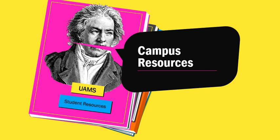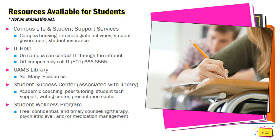Now we are going to discuss some of the campus resources available to all UAMS students. Almost all of these resources are available whether you are on campus or a distant student, so online students keep listening because some of this can be helpful. These are not an exhaustive list — there are lots of other resources — but these are some of the big ones. First we have Campus Life and Student Support Services. They deal with campus housing, intercollegiate activities, and student government. They are the ones that send the emails out for student insurance verification.